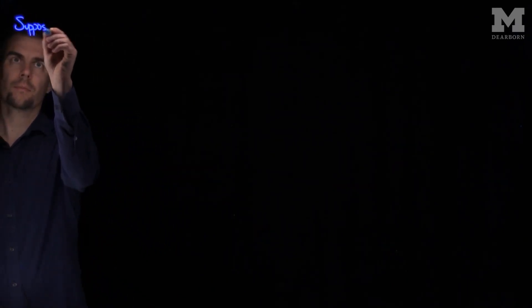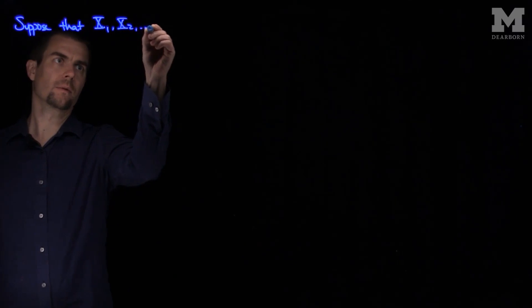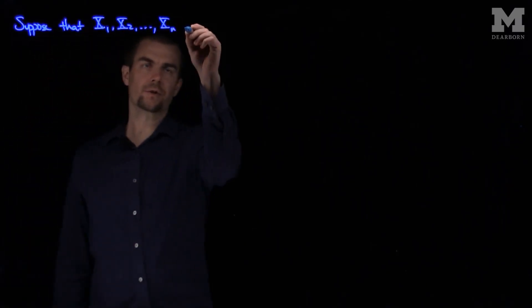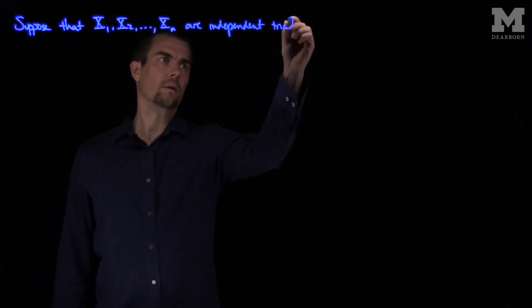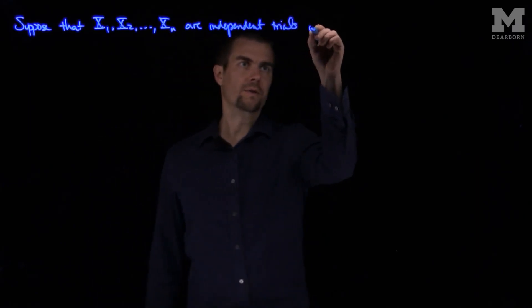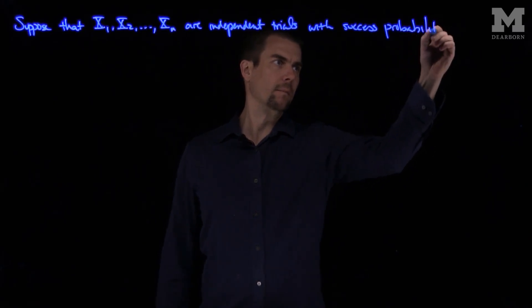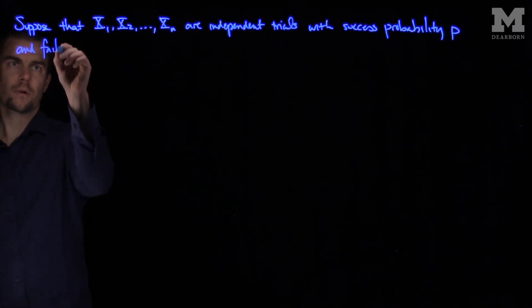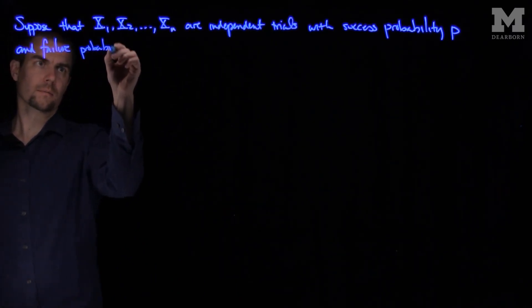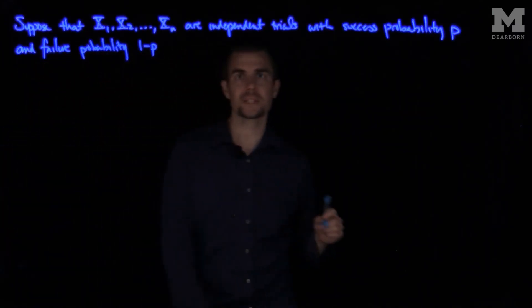If we assume that x1, x2, xn are independent trials with success probability p and failure probability 1 minus p, then if I consider this ratio over here...